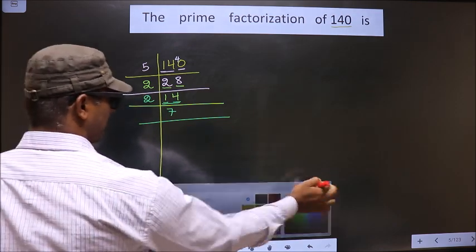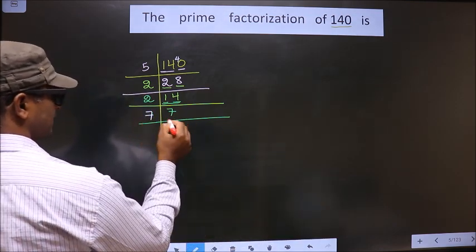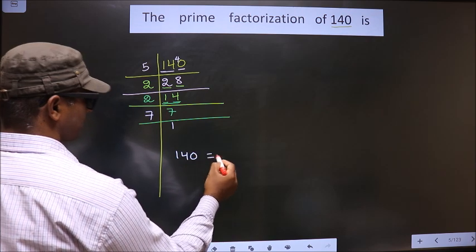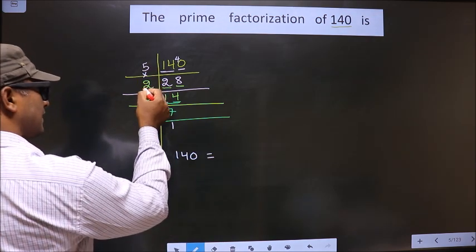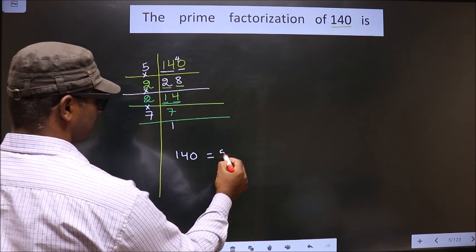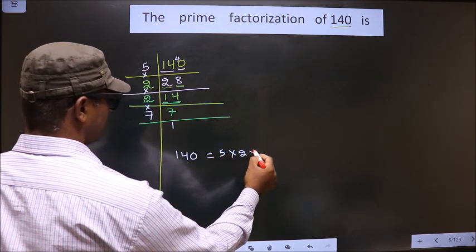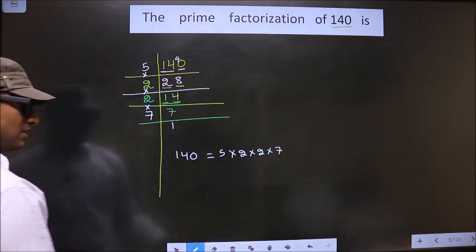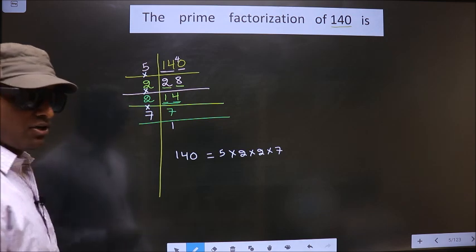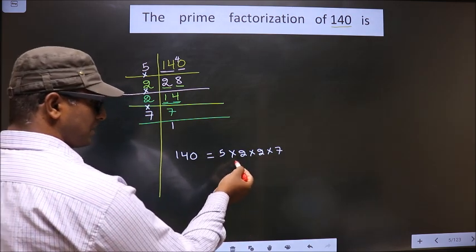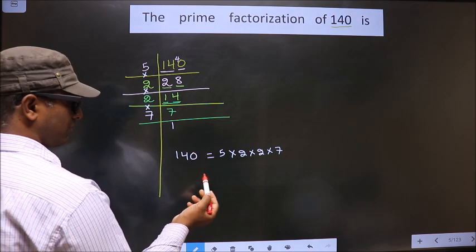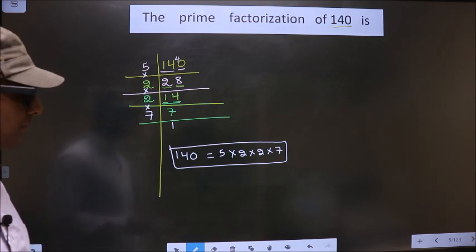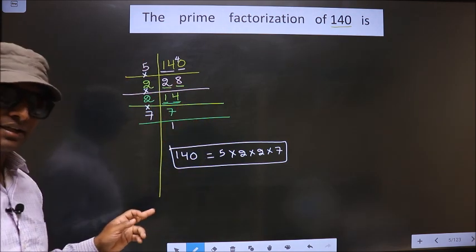Now, 7 is prime, so we should take 7 and 1. So, prime factorization of 140 is, we should multiply these, that is 5 into 2 into 2 into 7. So, this is the prime factorization of 140. We even call it as product of prime numbers of 140. So, this is our answer. Am I clear?